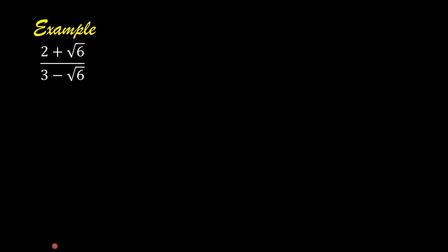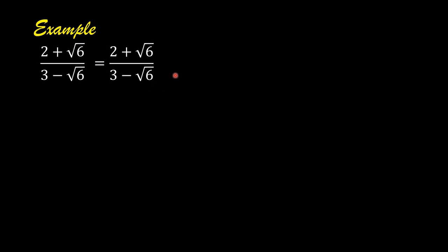So the conjugate of 3 minus square root of 6 is 3 plus square root of 6. We are going to multiply 3 minus square root of 6 by its conjugate, and do the same thing to the numerator. So we have: 2 plus square root of 6 over 3 minus square root of 6, times 3 plus square root of 6 over 3 plus square root of 6.